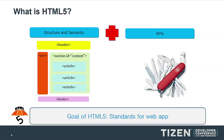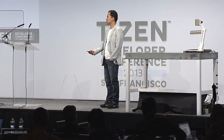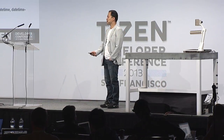The goal of HTML5 is not to make a document on the web. The goal is to make a web application. That's a big difference between the previous version of HTML — HTML 4.01 and HTML5. That's why HTML5 has a lot of APIs and markup for supporting application development.